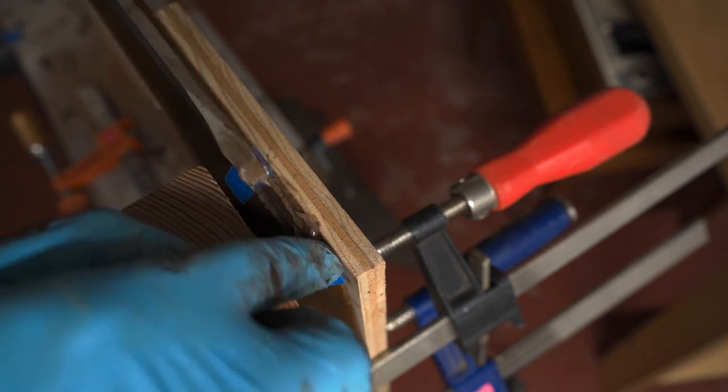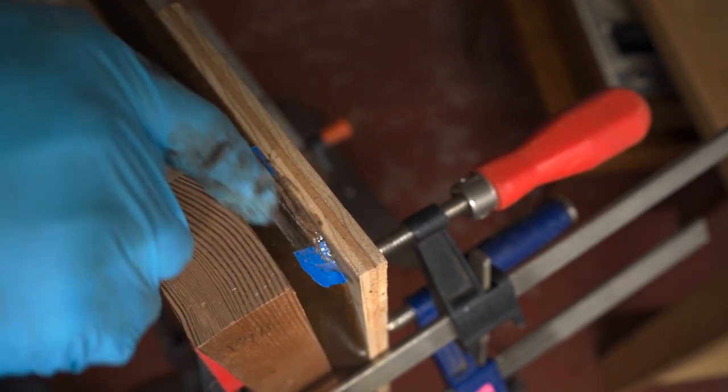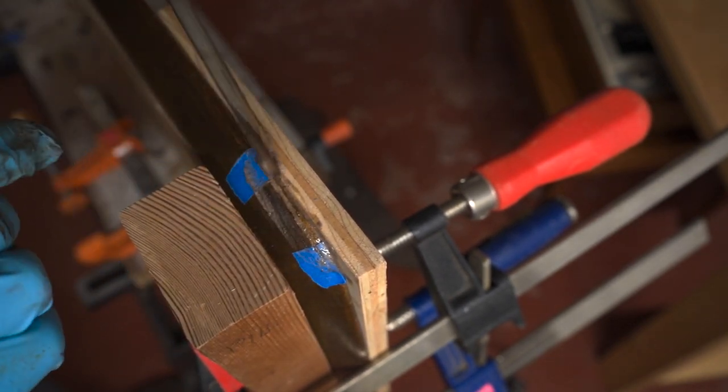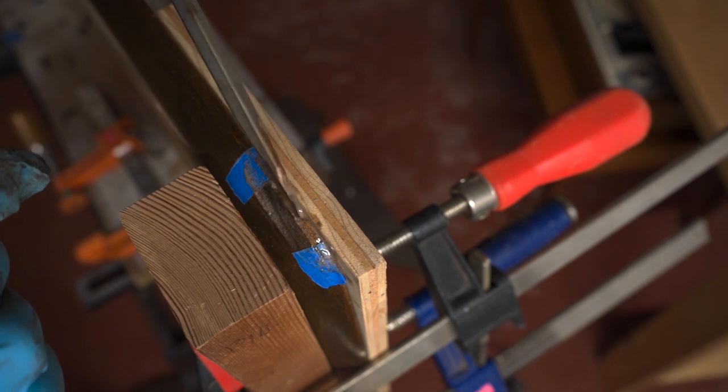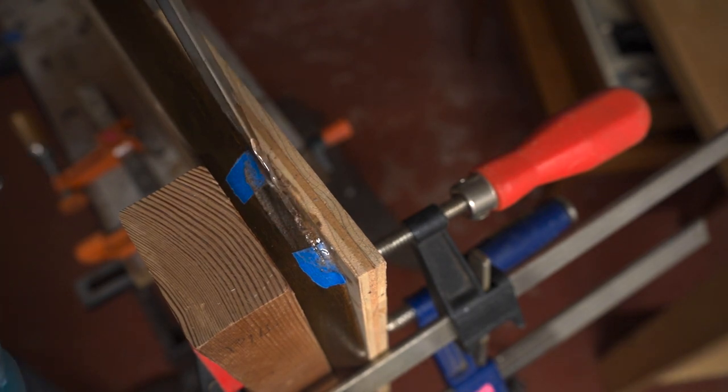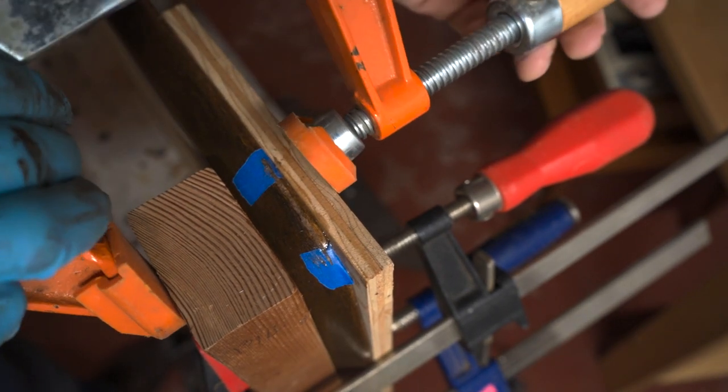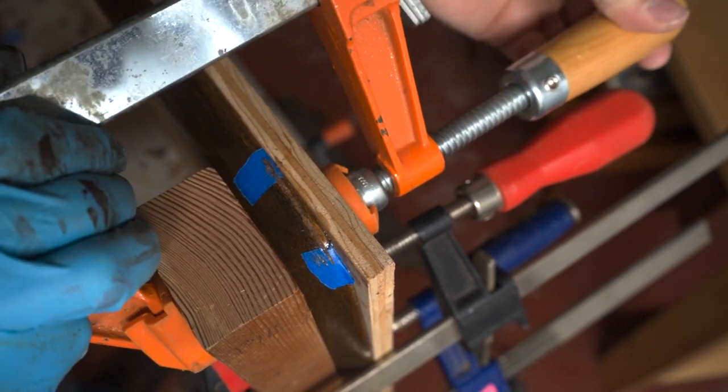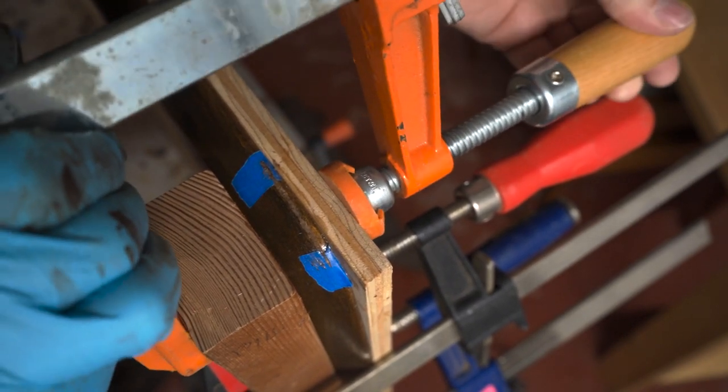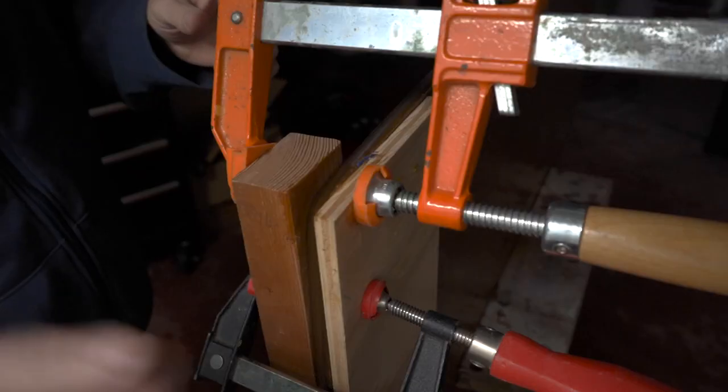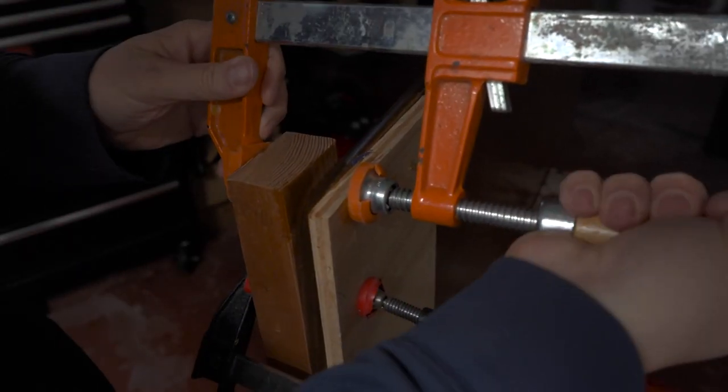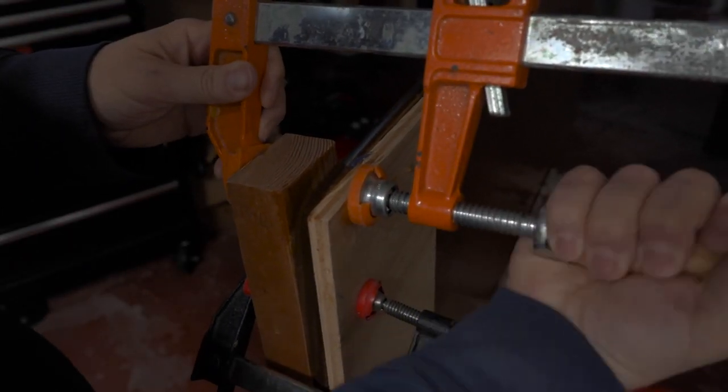I also mixed in some walnut sawdust into the epoxy. This helped to color it and also made it a little thicker. So I put the epoxy into that little slot that I made and then clamped it up. After giving it plenty of time to dry, I took off the clamps.